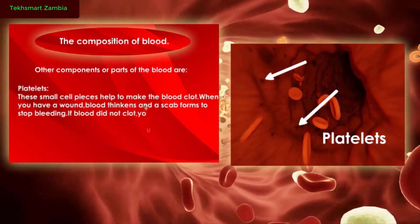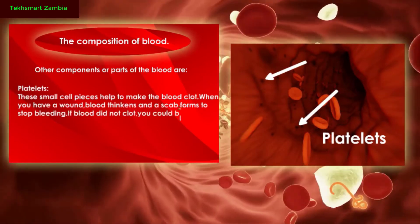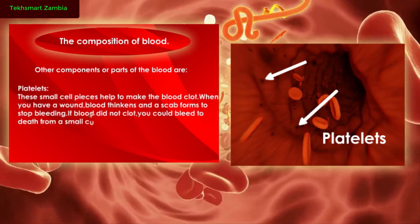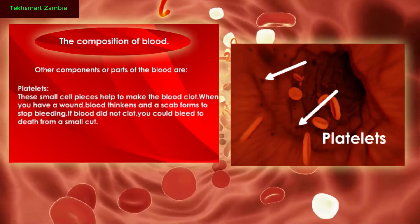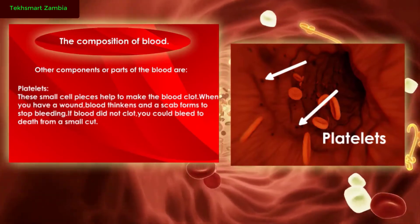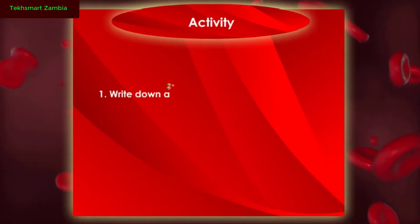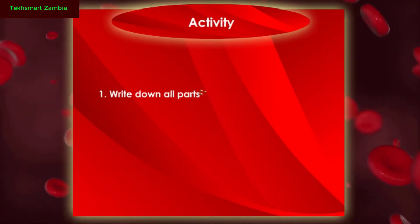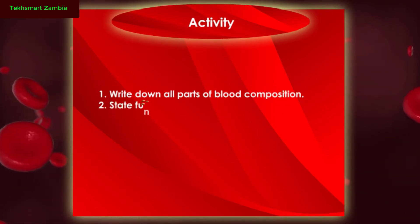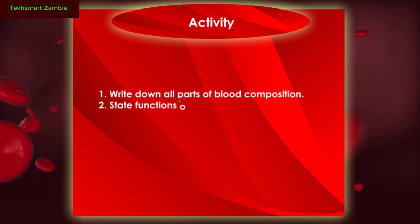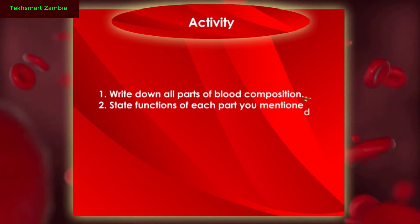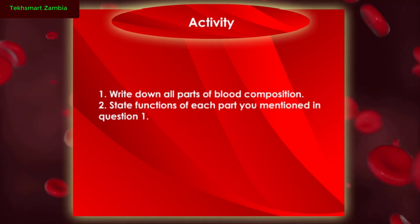If blood did not clot, you could bleed to death from small cuts. Activity number one: write down all parts of the blood composition, and state the functions of each part you mentioned in question one.